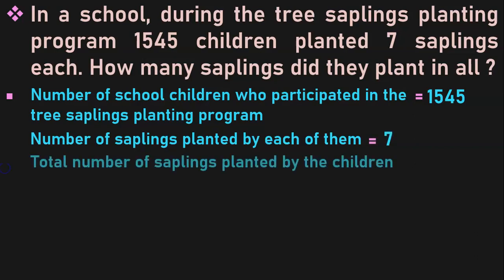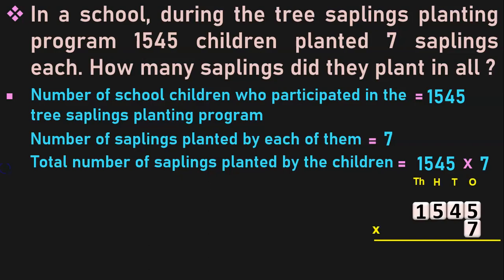What do we have to find? Total number of saplings planted by the children. Each child plants 7 saplings. We have to find what is the total number of saplings planted by 1545 children. We have to multiply 1545 by 7. So this is a 4-digit by single-digit multiplication.